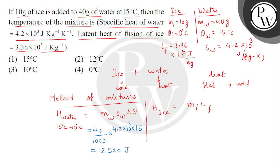Now we find the heat gained by ice. This equals mass of ice × latent heat of fusion of ice. Mass of ice is 10 grams, converted to kg, and latent heat of fusion is 3.36 × 10⁵ joule per kg. So the heat required to melt the ice is 3,360 joules.